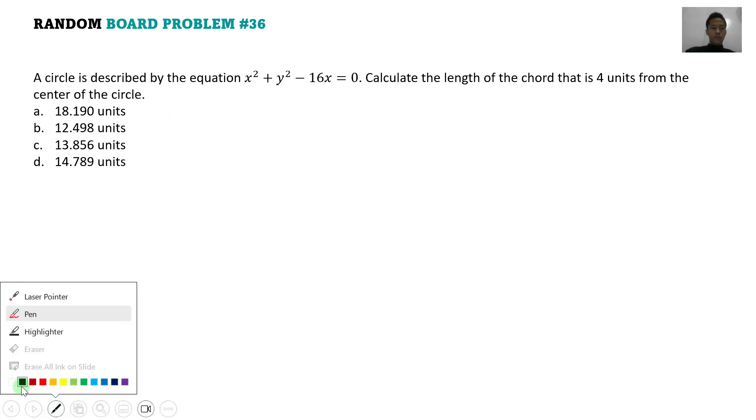So first, hanapin natin yung center ng circle natin. So yung ating circle is in the form, x minus h squared plus y minus k quantity squared is equal to r squared. So ito yung form natin guys. So h and k are the coordinate of the center of the circle. So basically, kailangan natin mag-complete square dyan sa x and then sa y.